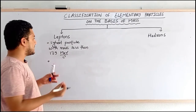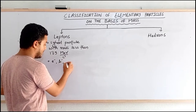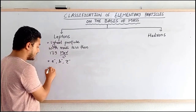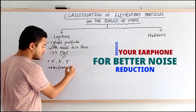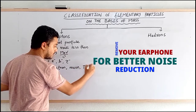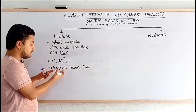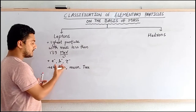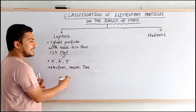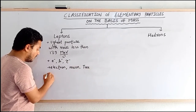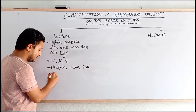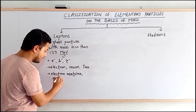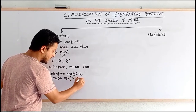Some of the very famous leptons are electrons, muons, and tau. We already know about the electron — it is an elementary particle with negative charge. Similarly, muons and tau are variants of electrons because they also carry negative charge, but they are heavier than electrons. Along with these, electron neutrino, muon neutrino, and tau neutrino also fall under the same category.